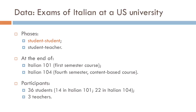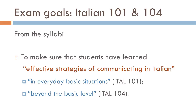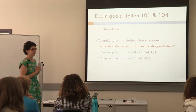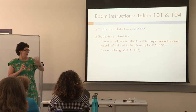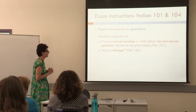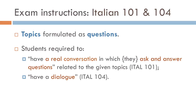We are now going to focus on the student-student phase of the exam, both for Italian 101 and 104. Basically, the idea was that the students had learned effective strategies for communicating in Italian in everyday basic situations for Italian 101, and beyond the basic level in Italian 104. Topics were formulated as questions and students were required to have a real conversation in which they had to ask and answer questions related to the given topics. If you look at the instructions, you can see how the policy expectation is that conversation is basically a series of question and answer sequences.